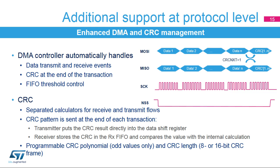During protocol-level communication, the DMA controller can be used to handle the data flow events, the CRC calculations, and the updating of the FIFO threshold automatically. In case of threshold control, the last odd data frame is correctly applied in packed mode when the number of frames is not aligned with the packet size. If the CRC is enabled, separated CRC calculators are used for the transmitter and receiver. The CRC calculation result is applied at the end of each transfer automatically by the DMA controller or by software control. Results from the transmitter's CRC calculator register are loaded directly into the shift register, and the received CRC value is stored in the FIFO and compared with the receiver's CRC result. The CRC polynomial used for the calculation is programmable, and the length of the CRC pattern can be set to either 8- or 16-bit frames.